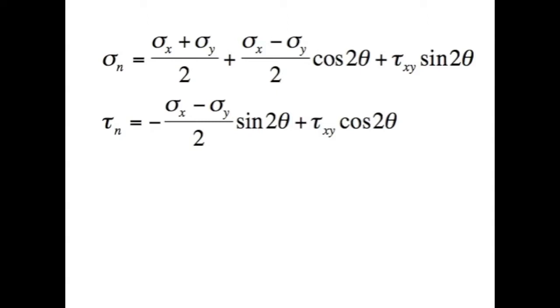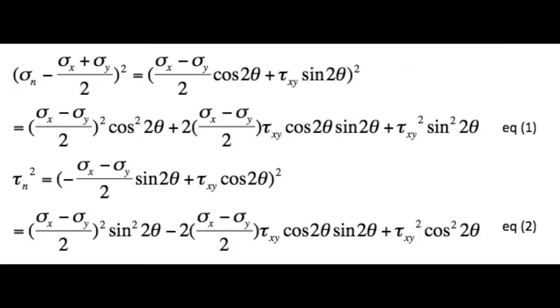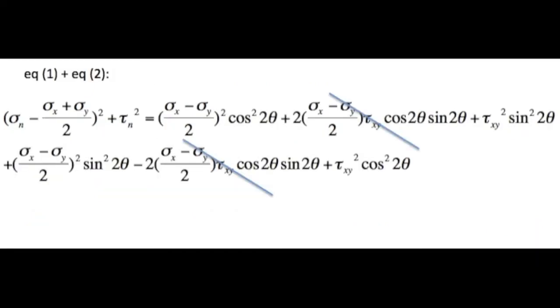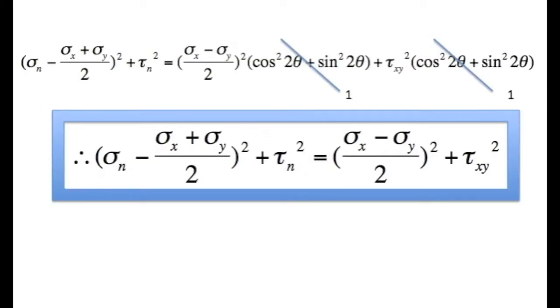Then we move all the terms containing two theta to the right side of the equations, and all the rest of the terms to the left side of the equations. And we square both sides of the equations to get equation 1 and equation 2 as shown here. We add equation 1 and equation 2, and some terms cancel. Finally, we get this really clean equation shown here.